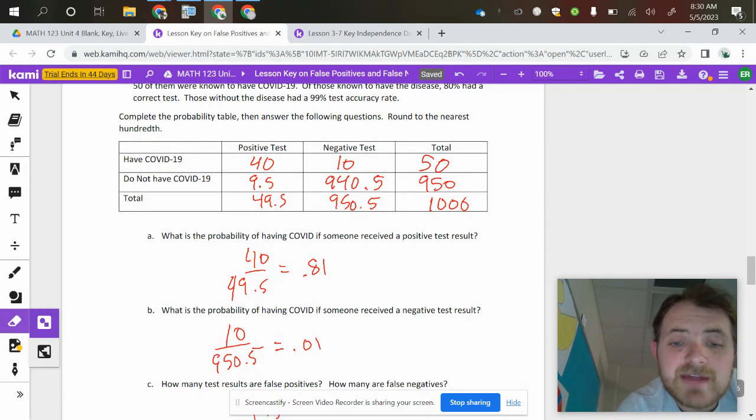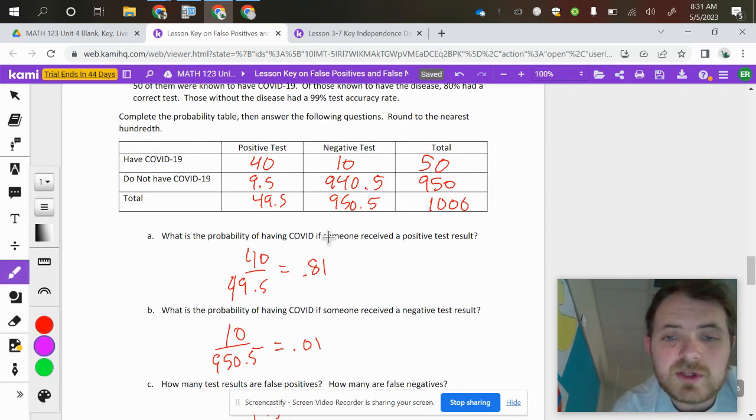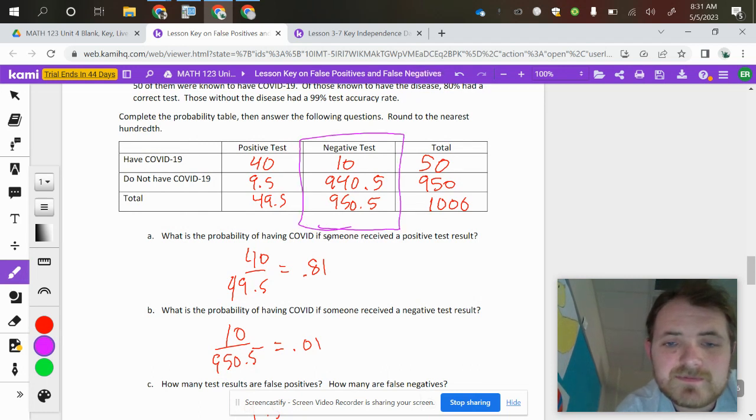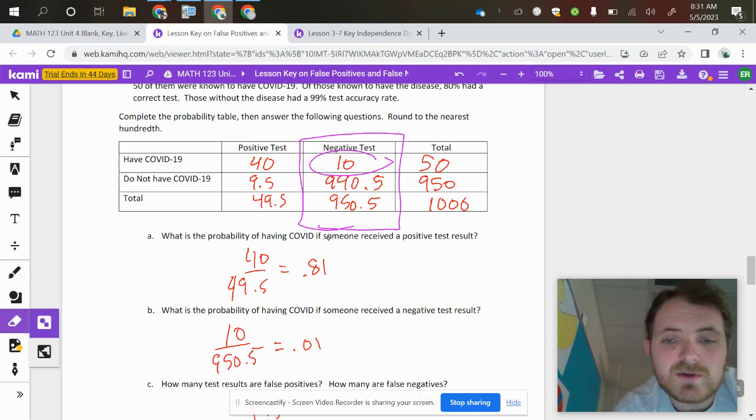What's the probability of having COVID if someone received a negative test result? So I'm looking in the negative test section. The people that tested positive are 10. The total that tested negative are 950.5. So that division there gives you 0.01.